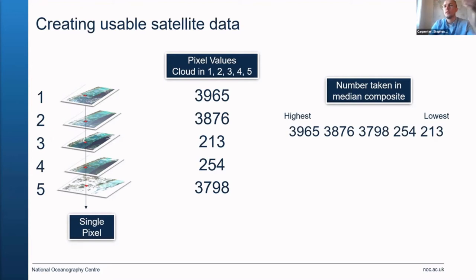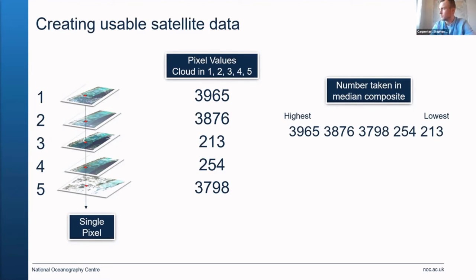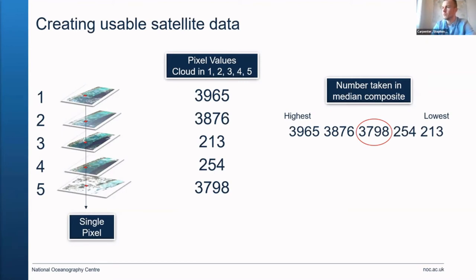If we change our pixel to somewhere else in the map, you'll see in the middle column a different mixture of pixel values. We've got three images — one, two and five — all showing values around 3800. When we come to take the median, we're going to extract a value of 3798, which is cloud. So we're going to have to mask out these areas of cloud and get rid of these high values, leaving us with just 254 and 213, which we can use in the final composite.